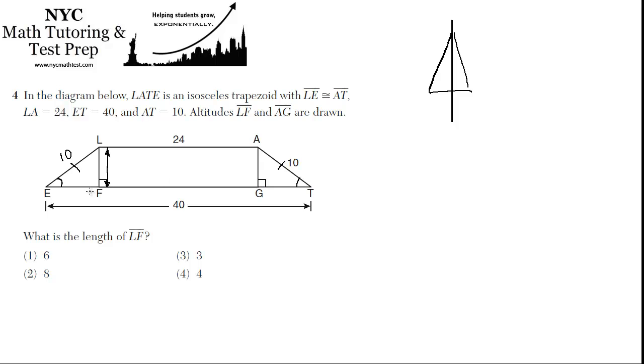So if there's 16 extra to go around, and half of it's on each side, then each of these smaller segments from here to here, EF must be 8, and GT must be 8. And there's your extra 16.